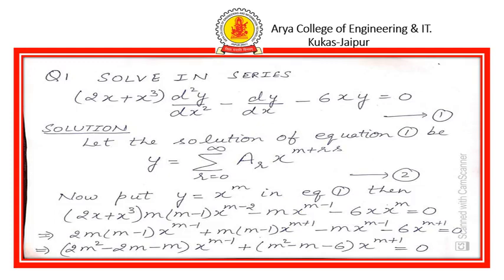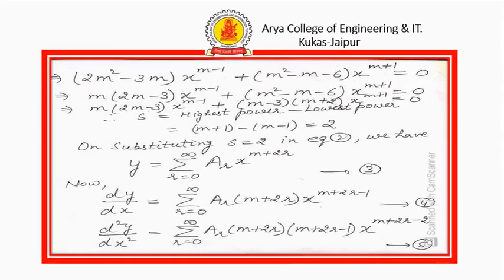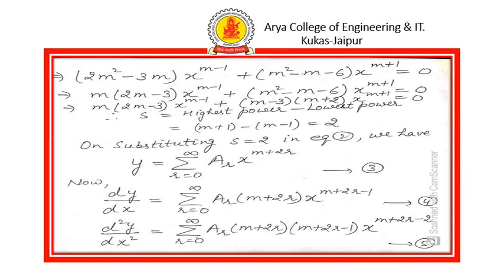We collect the various powers of x arranged in ascending powers of x. Then we factorize the coefficients of each power of x as much as possible. The coefficient of x to the power m minus 1 is m(2m minus 3), and the coefficient of x to the power m plus 1 in factorized form is (m minus 3)(m plus 2).